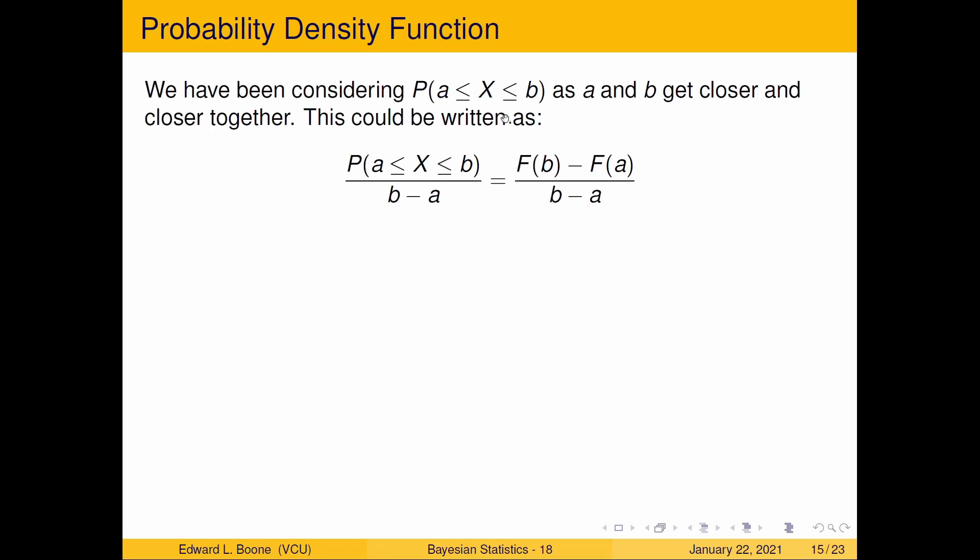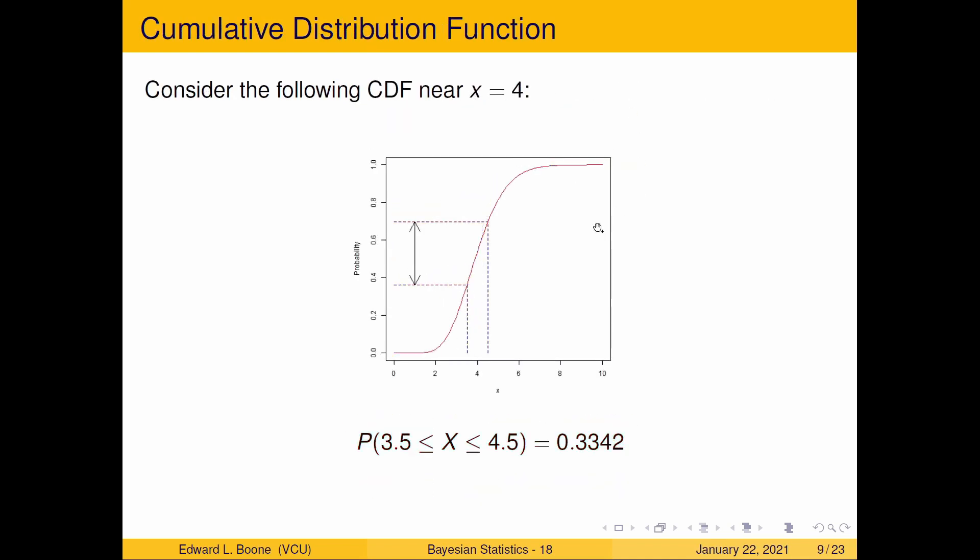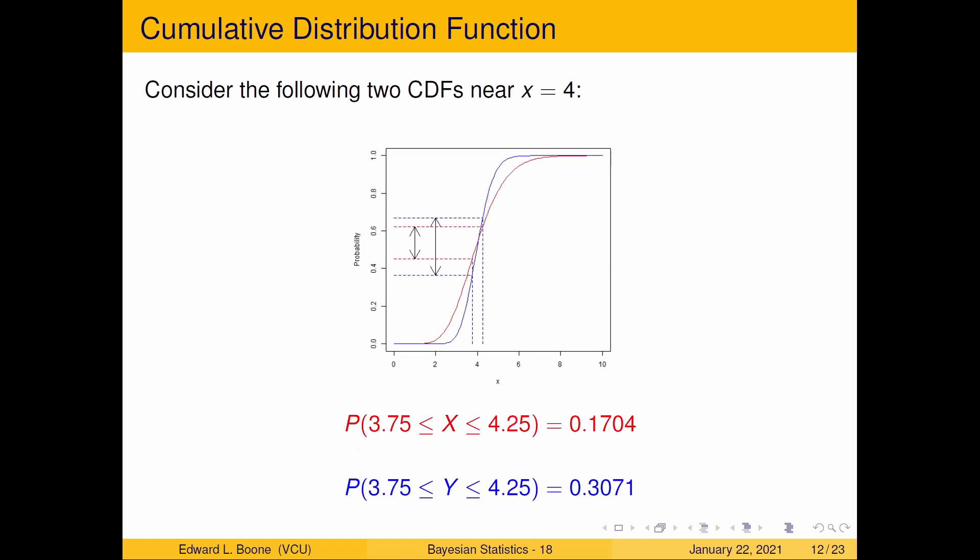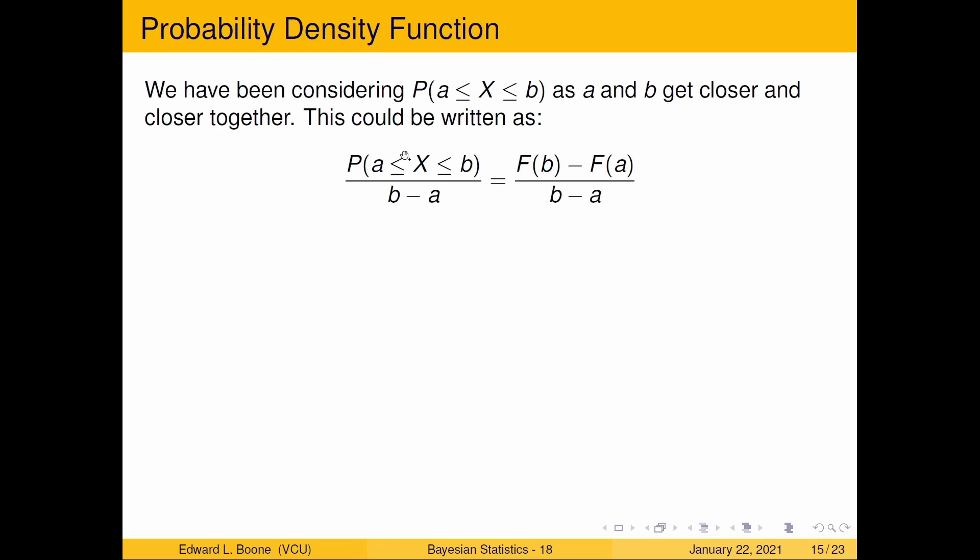Okay, so this is what we've been doing. We're saying, what is the probability as A and B get closer and closer together? If you want to run through in pictures real quick, we can say, here we are. And we move closer, closer, closer, closer. And now we're interested in this. So we want to look at the ratio. How much did the probability change over how much did x change? You could write this as F of B minus F of A over B minus A. And if I stare at this, this is something I've seen before. This is the slope of the CDF of F. It's a slope.